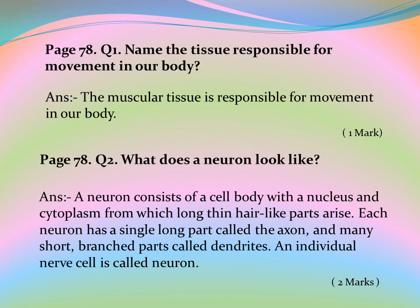Page 78, Question 2: What does a neuron look like? Answer: A neuron consists of a cell body with a nucleus and cytoplasm, from which long thin hair-like parts arise. Each neuron has a single long part called the axon and many short branched parts called dendrites. An individual nerve cell is called a neuron.